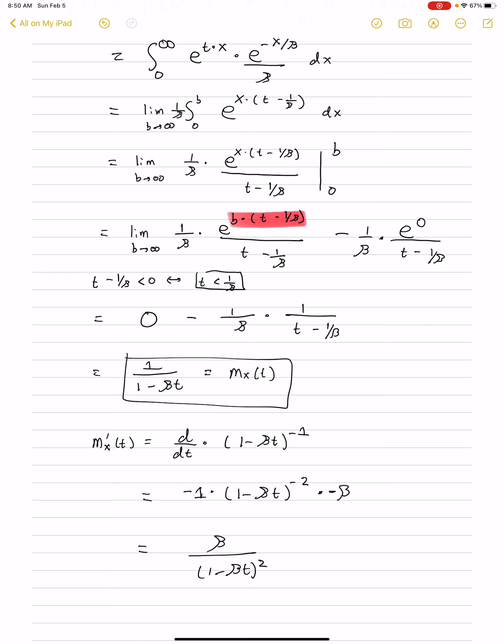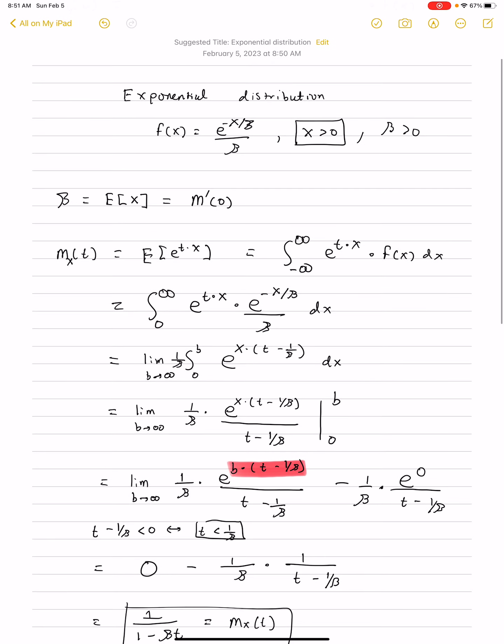So, we're going to write that down. Beta minus 1 over beta t squared. And all we need to do is plug in 0. And when we do that, this will be beta divided by 1 minus 0 squared. And that is beta. So, we have proved that the parameter beta represents the expected value.